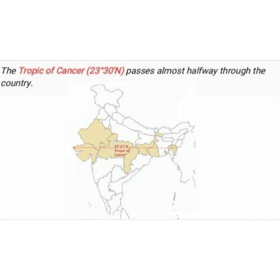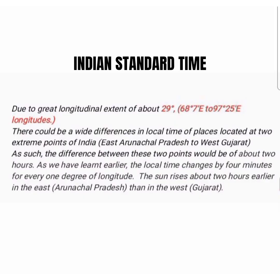The Tropic of Cancer, that is 23°30'N, passes almost halfway through the country. Now we will study about Indian Standard Time. Due to the great longitudinal extent of about 29°, from 68°7'E to 97°25'E, there could be a wide difference in local time of places located at the two extreme points of India.